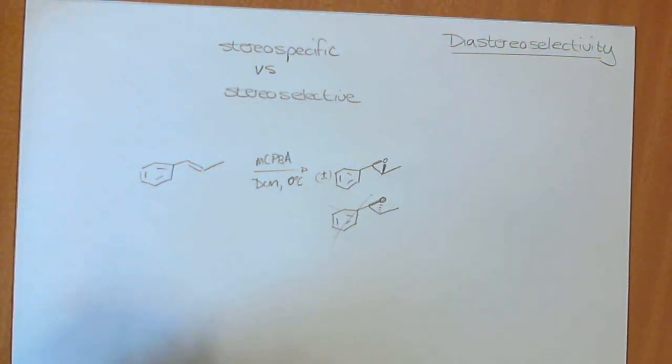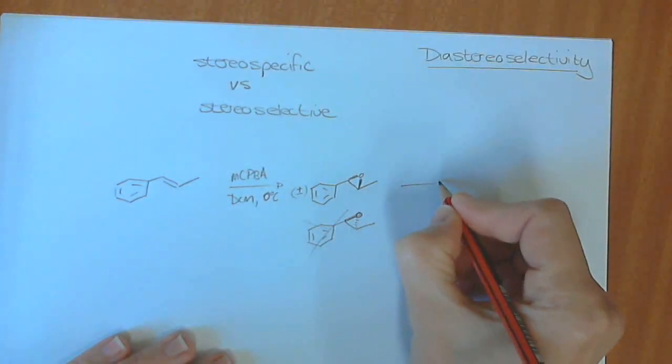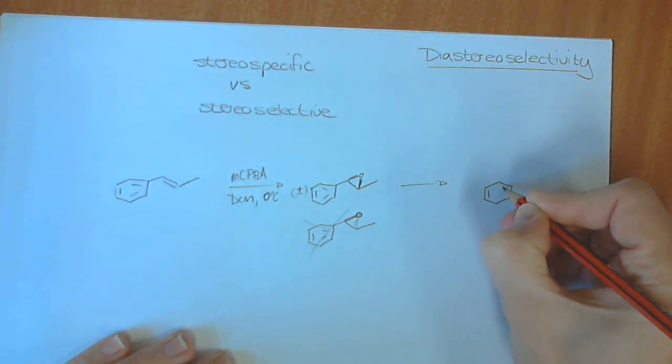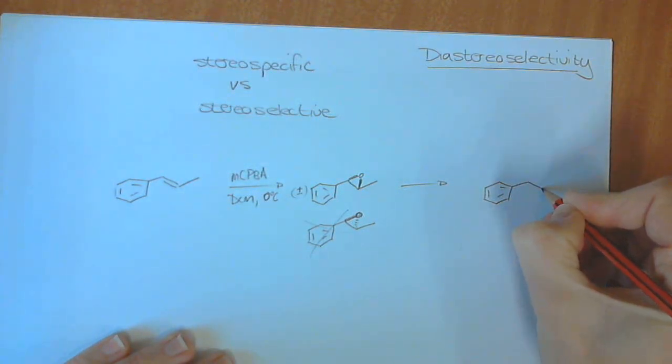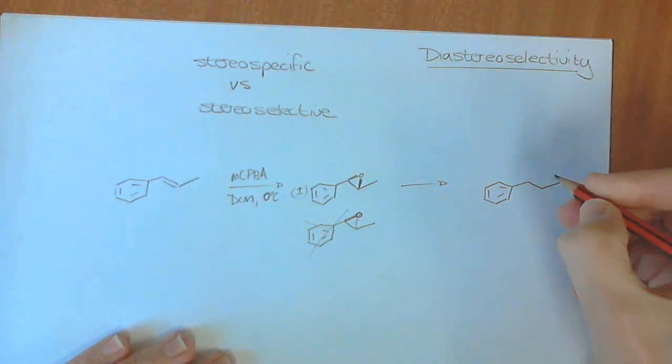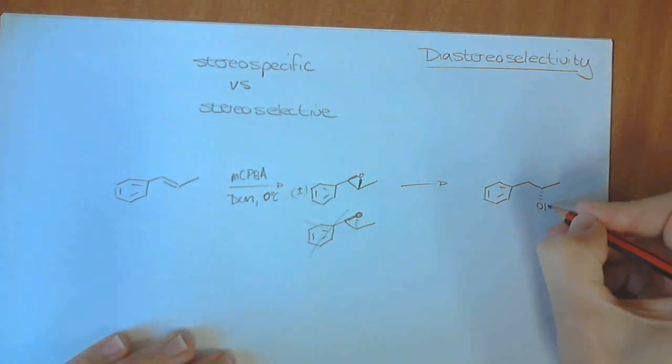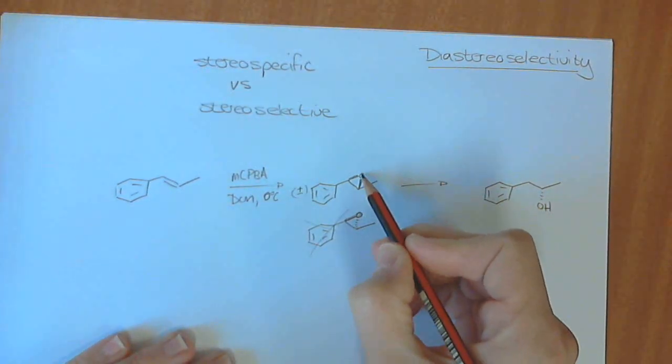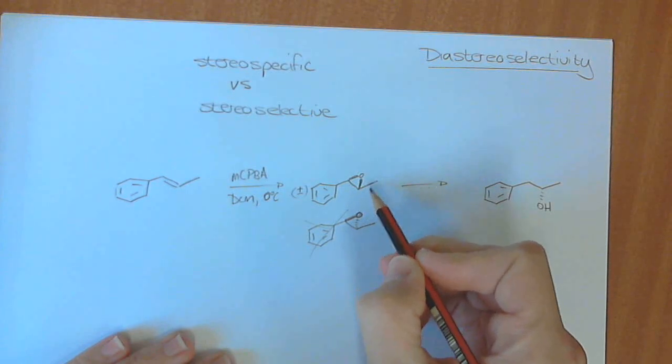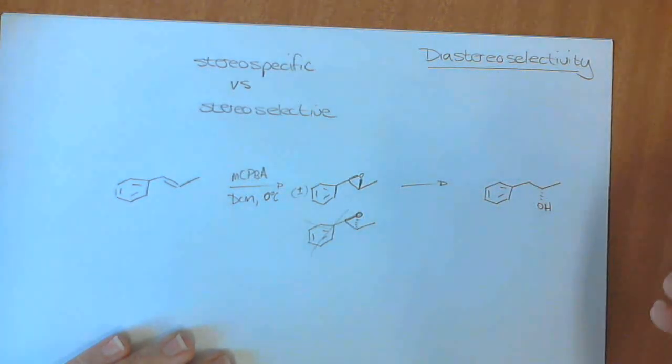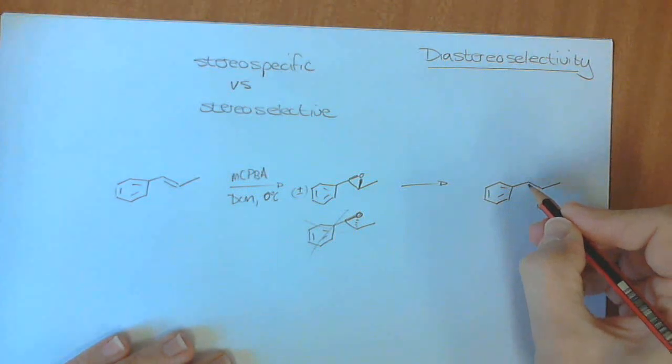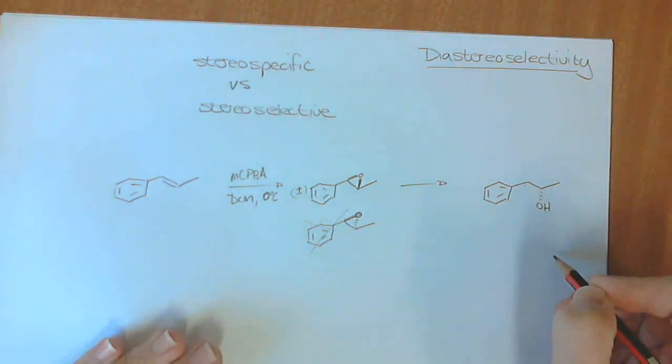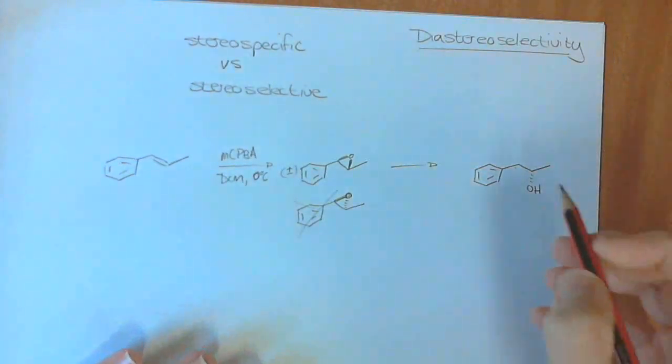We could then open this epoxide, and we could open it up to, say, let's get this right here, this alcohol. Have I done that correctly? Let's assign the chirality over here. One, two, three, the edges are to the back over here, so this is S. One, two, three, looks like R, but the edge is coming to the front, so it is correct.